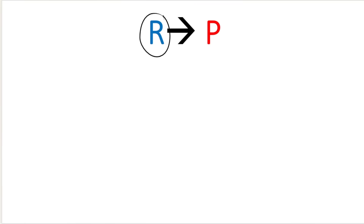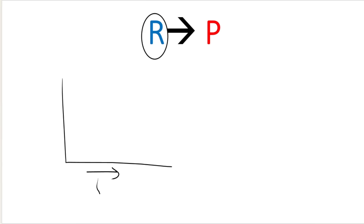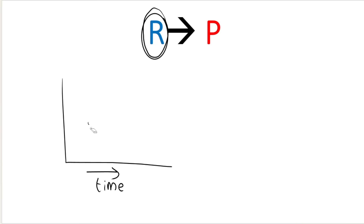What happens as a reaction goes on is we start with reactants, and as time goes on — as we move along the x-axis — the reactants get used up. You might see a curve looking something like this. And what happens to the products? Products get produced. We start with zero products, and as the reaction goes on, the curve increases.